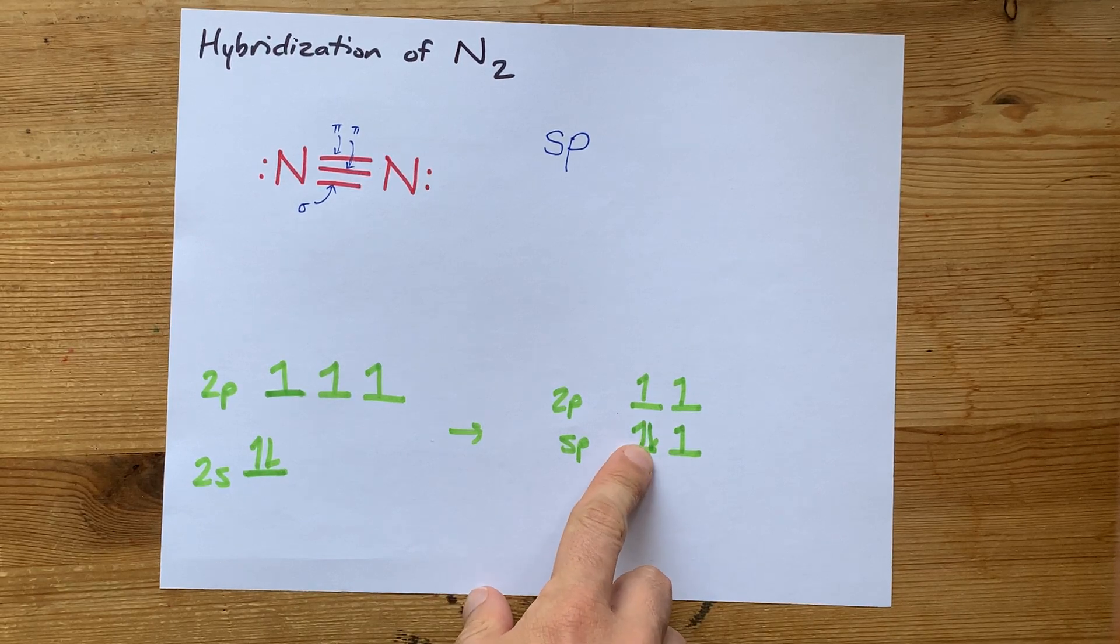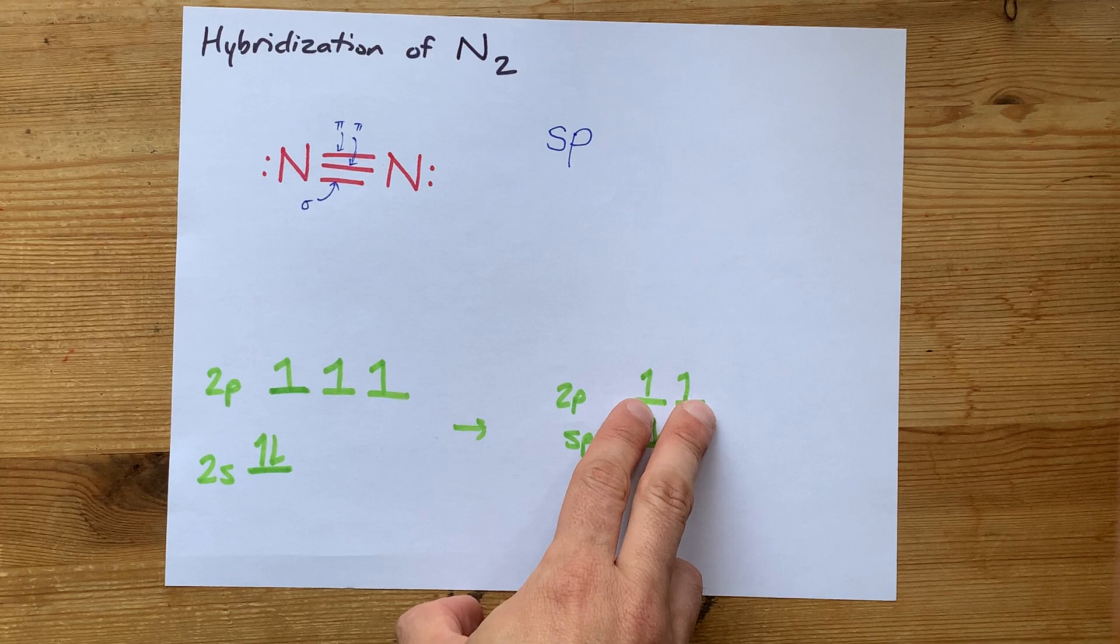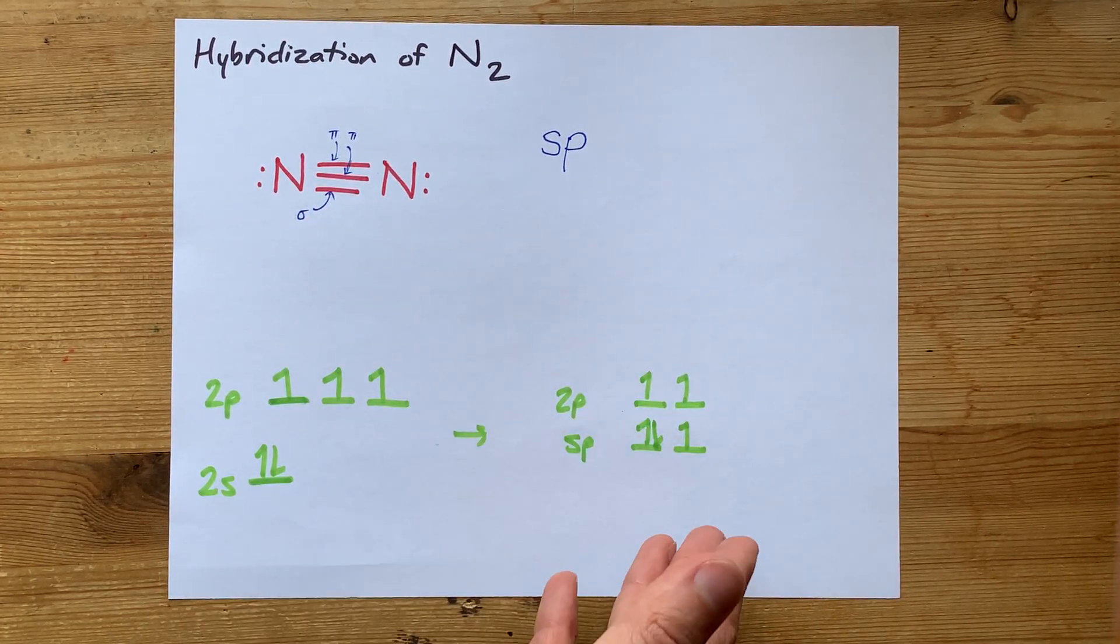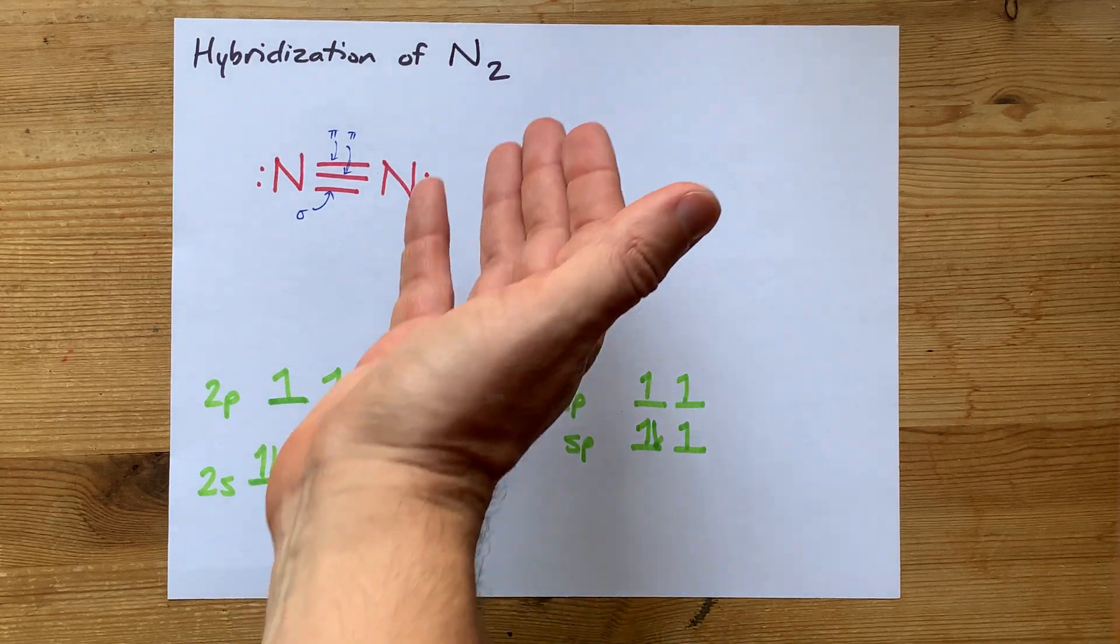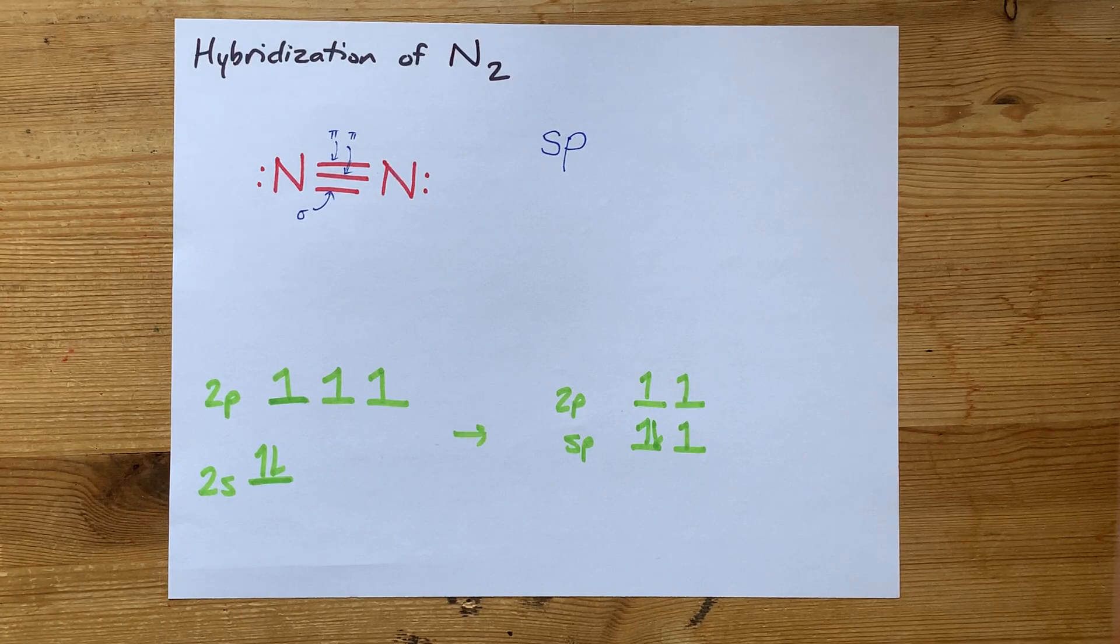Here's where you have the lone pair and the sigma bond and the two pi bonds that each of the nitrogens have. That's just me explaining in detail why the answer is sp. Good job. Thanks for being with me, and best of luck.